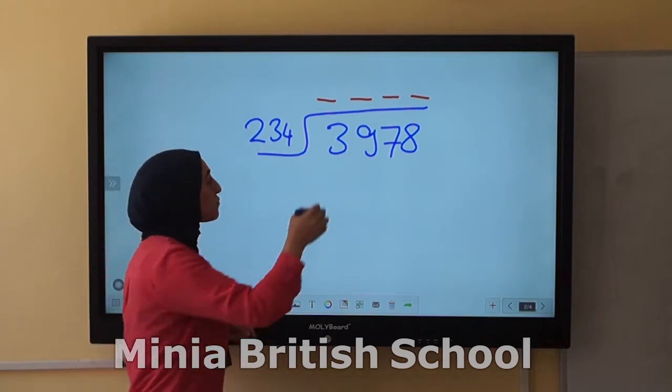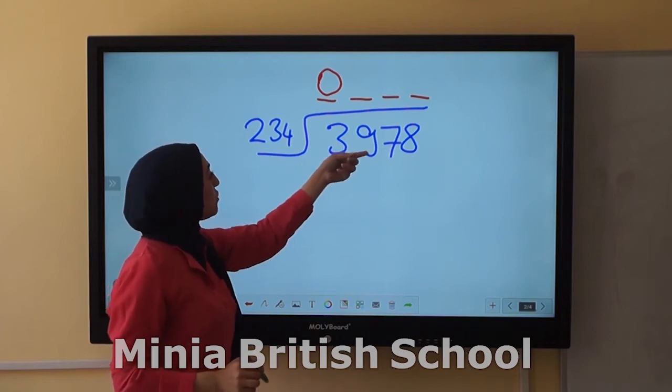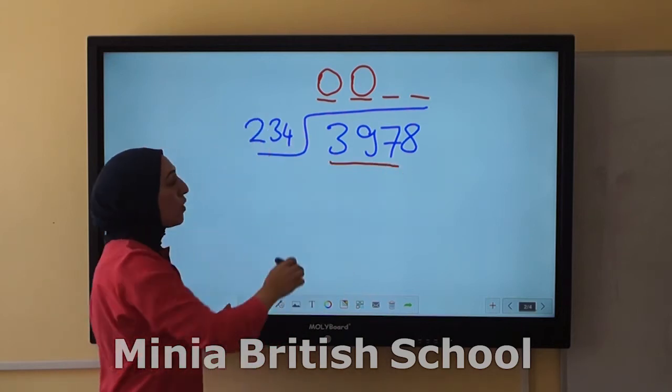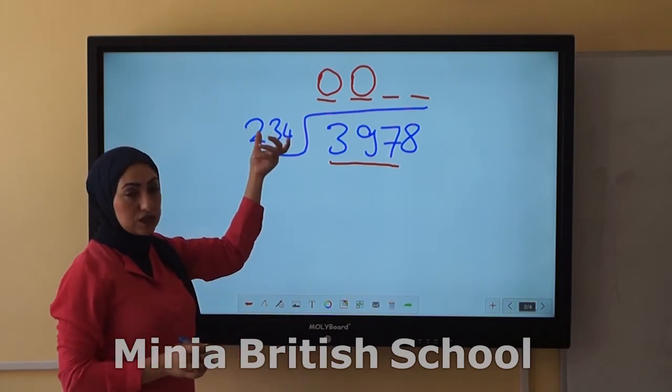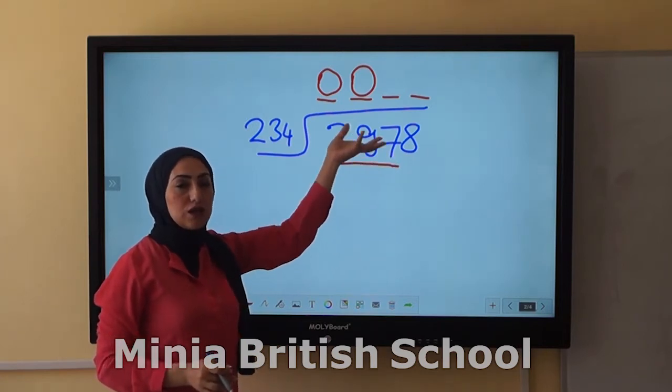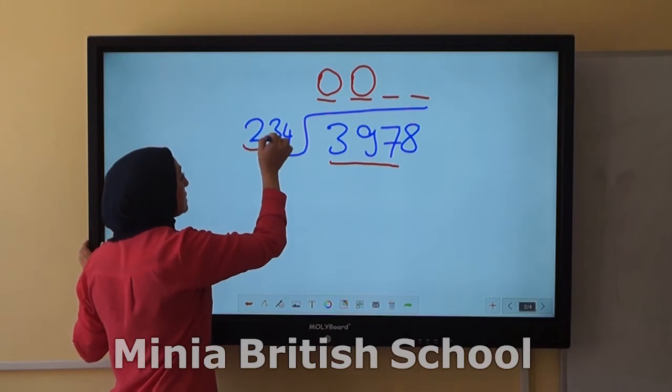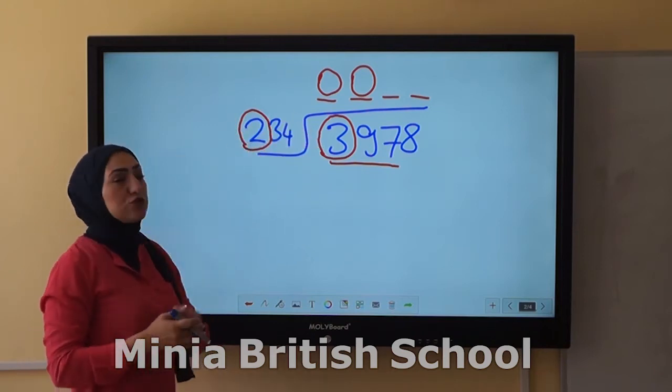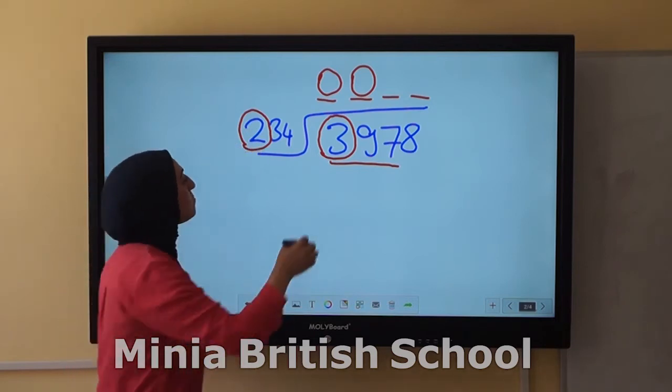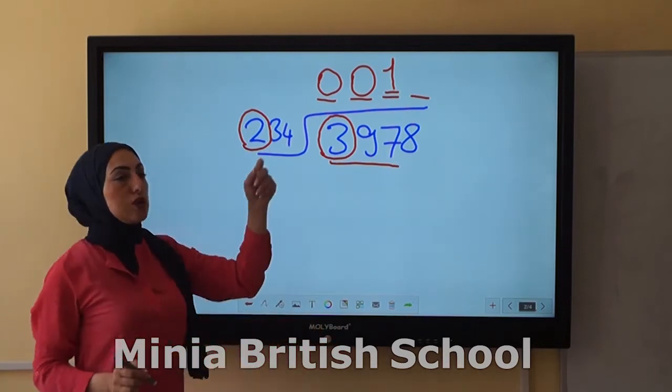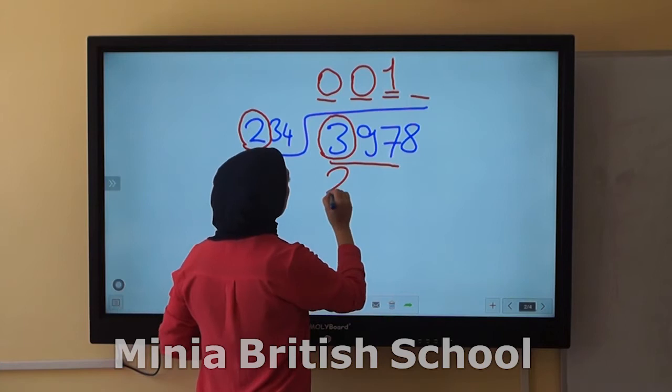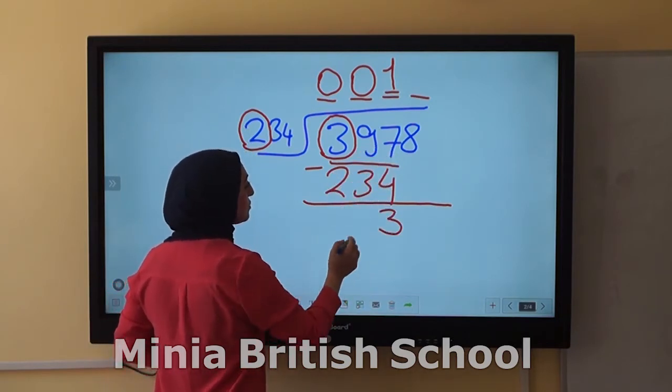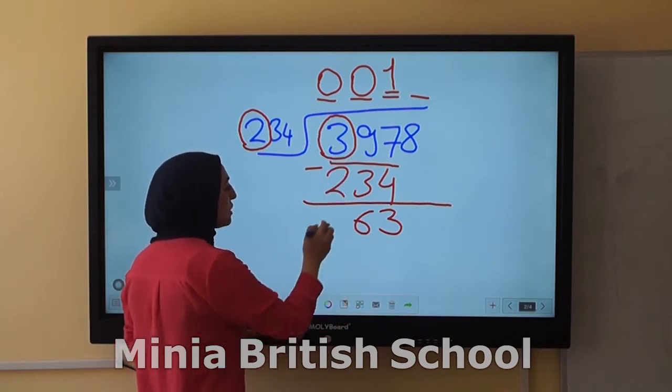As we said in grade 4, if we have here the dividend is 4 digits, so the quotient should be 4 digits, only to be sure that I'm right. 3 divided by 200, of course, can't be. 39 divided by 200 also can't be. 397 divided by 234. As this is a 3-digit number, I want also 3-digit number here to divide by. The second step, I'll take the first digit from here and here. 3 divided by 2 equals what? Equals 1.